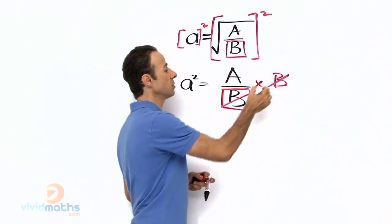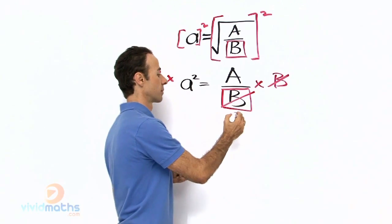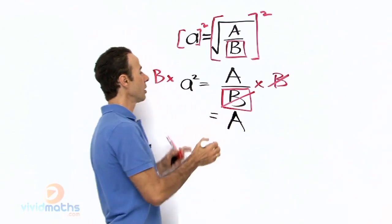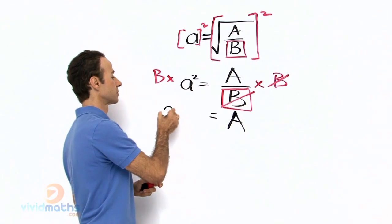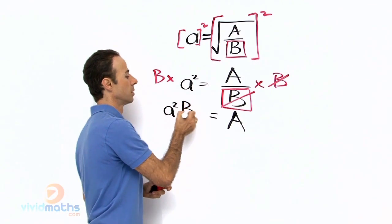So let us cancel, cancel, and we are left with the A over here. And on the left hand side it is simply a squared b equals A.